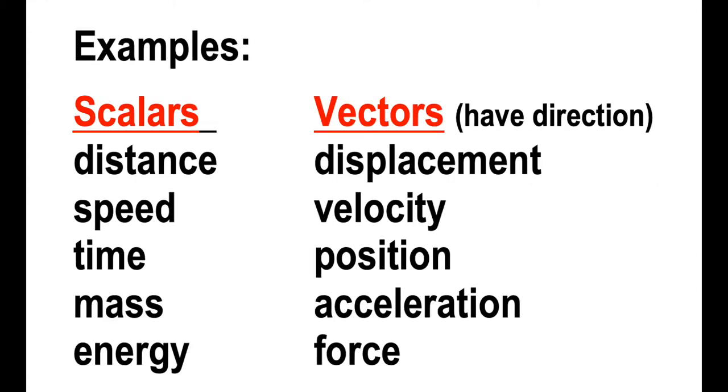You only need one number to describe distance, or speed, or time, or mass, or energy. But quantities in physics that have directions are displacement, velocity, position, acceleration, force. These are just some of them. There are plenty more.